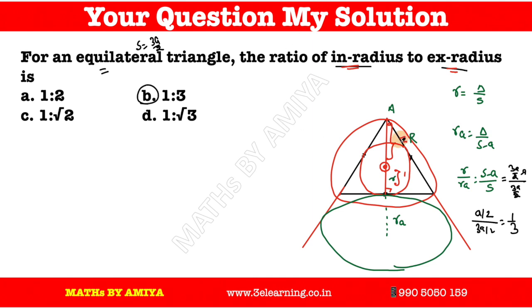This is a basic question, but maximum people mistake it as 2 is to 1 because they think of in-radius and circum-radius. But the question is in-radius and ex-radius. You should know that in an equilateral triangle, if circum-radius is 2, in-radius is 1, then ex-radius is 3.